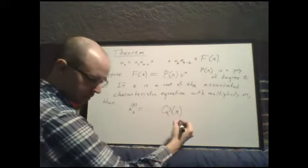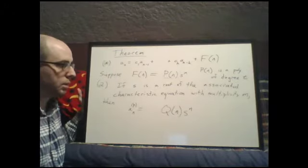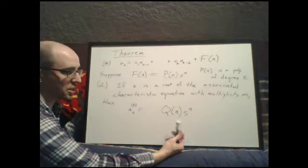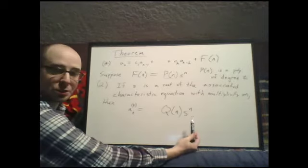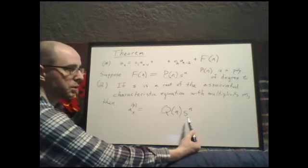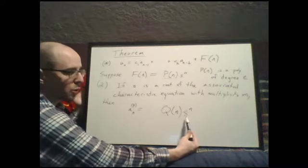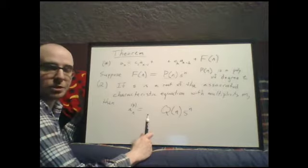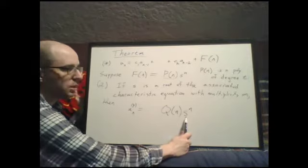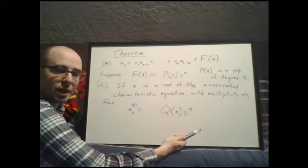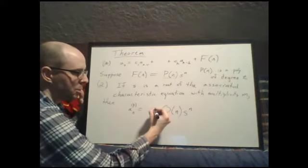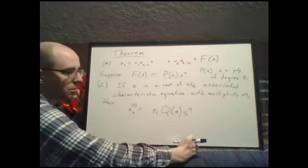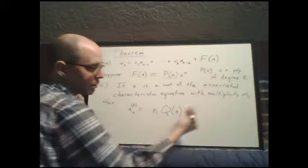Then a_p(n) will have the form q(n) times s to the n — same initial guess — but this will show up as part of the homogeneous solution, since the homogeneous solution involves s to the n for each root. To make sure the particular solution doesn't overlap with the homogeneous solution, we multiply by more n's — specifically by n to the m power, where m is the multiplicity.